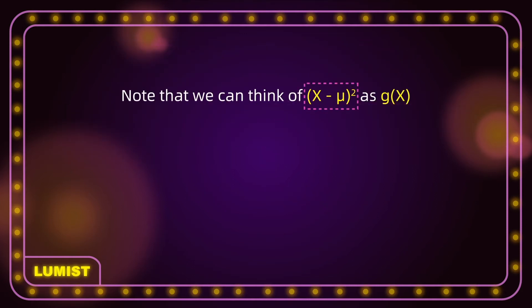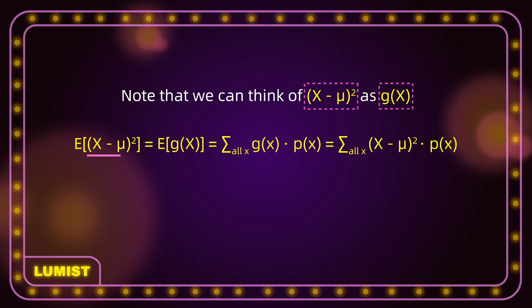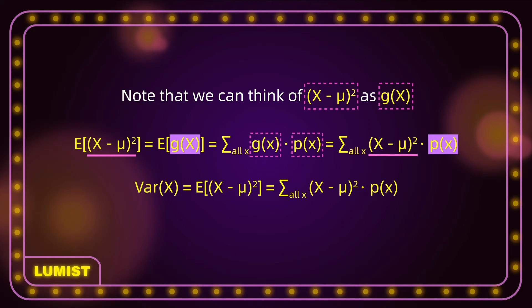We can think of (x − μ)² as g(x) and use the previous formula. The expectation of (x − μ)² equals the summation of (x − μ)² for all possible x values multiplied by their corresponding probabilities. This gives us the proper formula for variance of x: Var(x) = E[(x − μ)²] = Σ (x − μ)² · P(x).